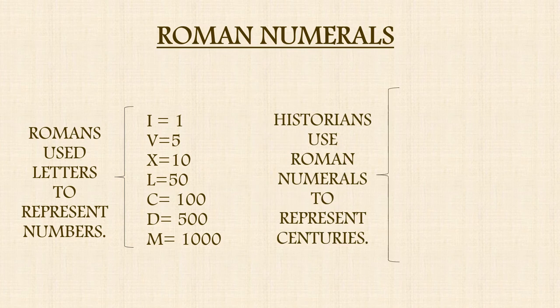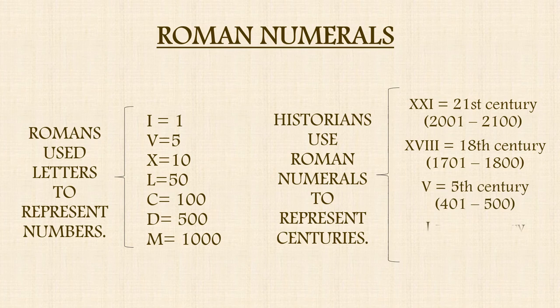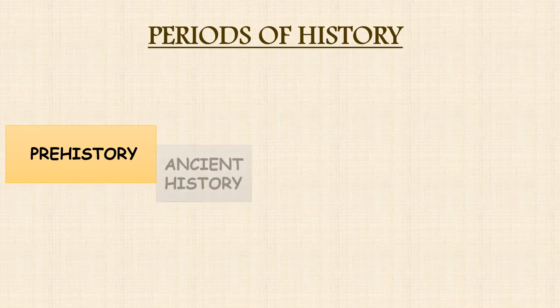Historians use Roman numerals to represent the number of different centuries. As you can see in the example, you can use different letters to represent the different centuries. Remember, a century equals 100 years.